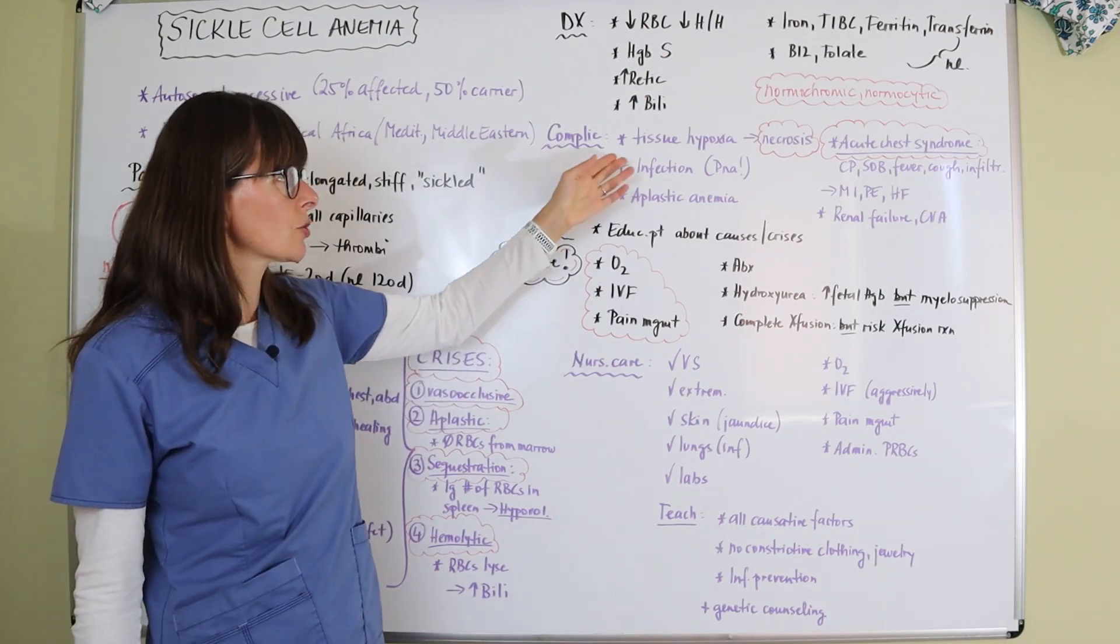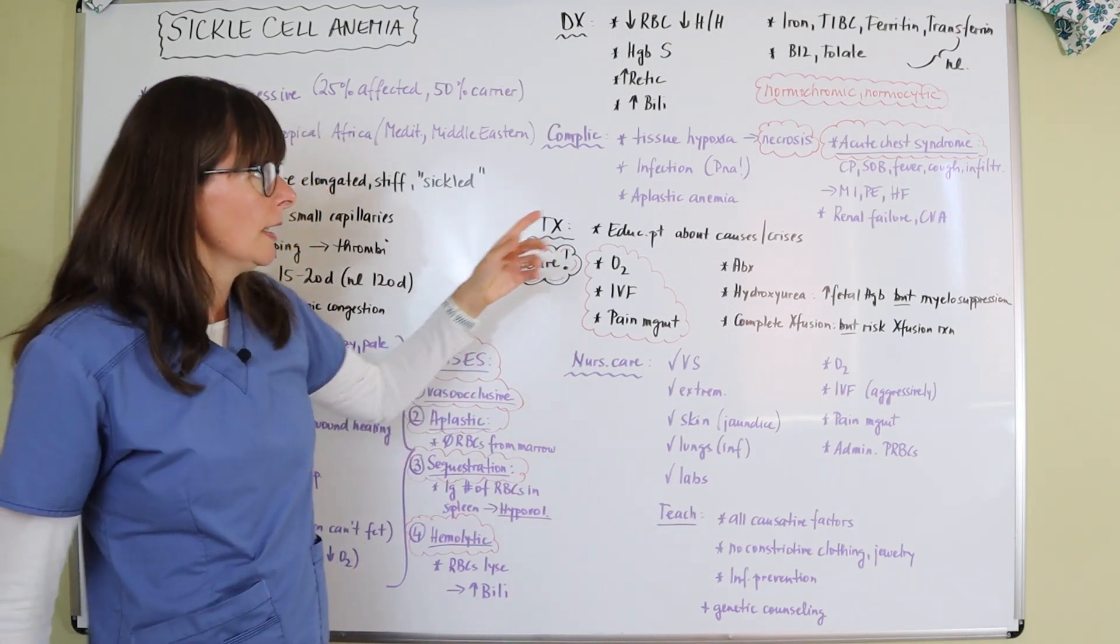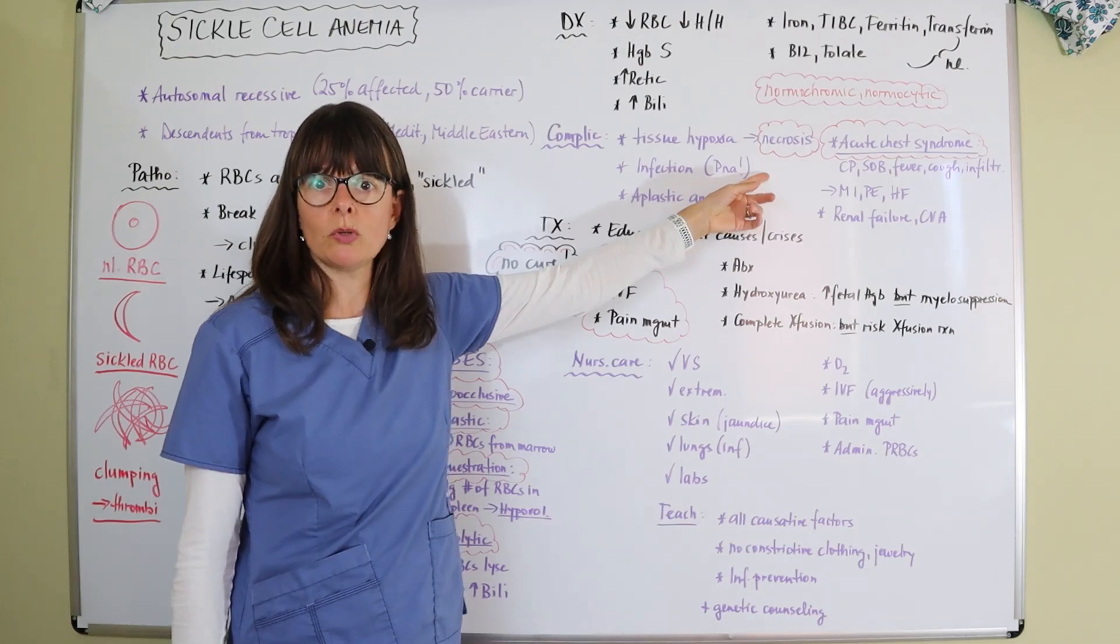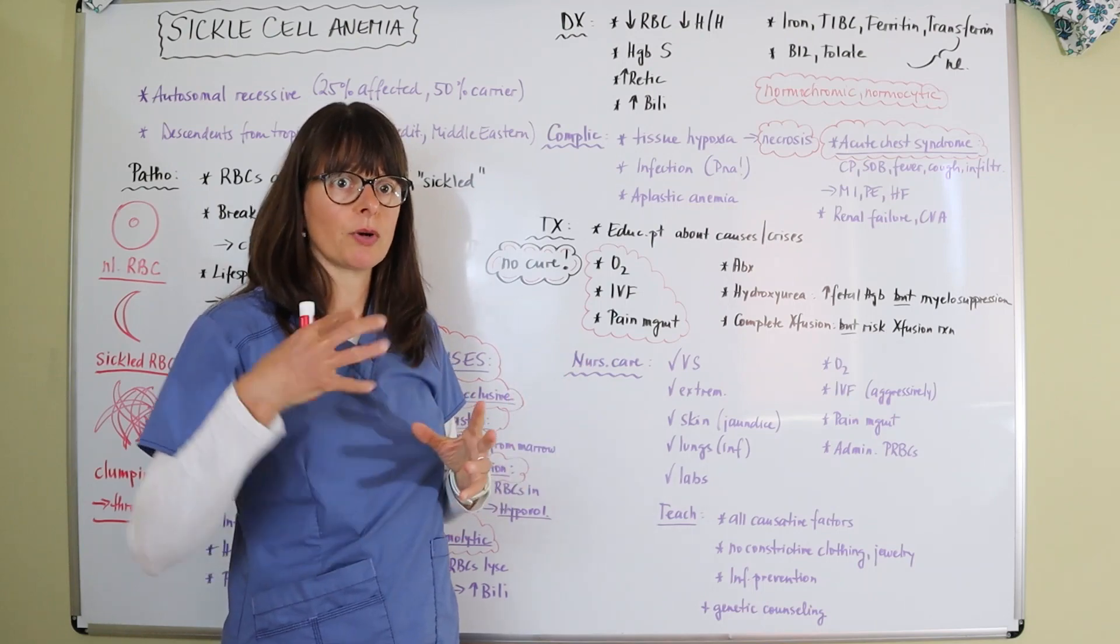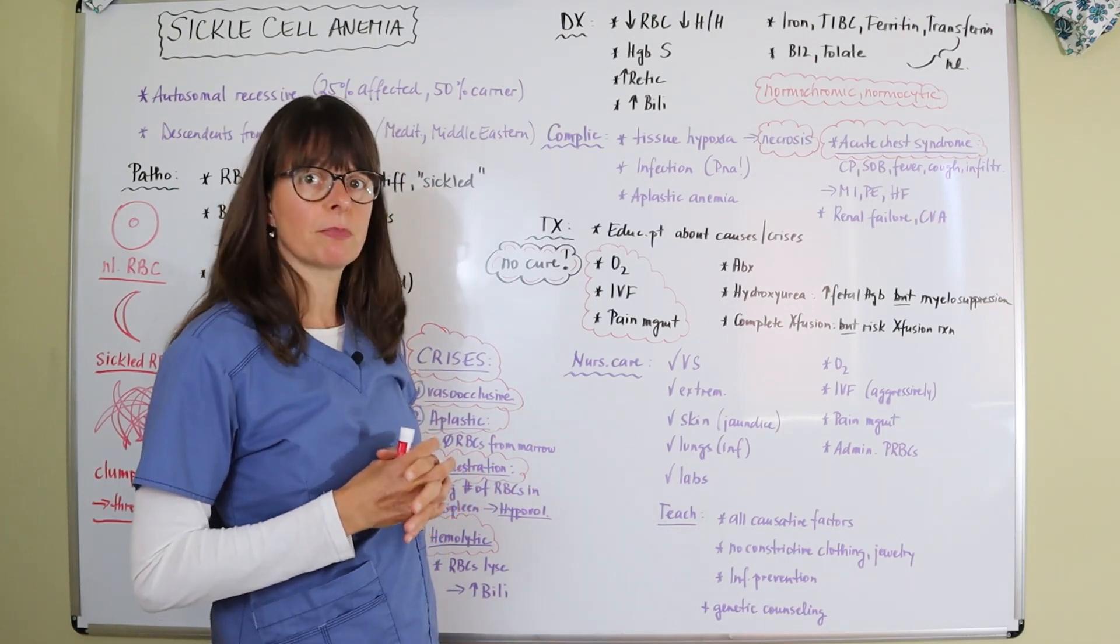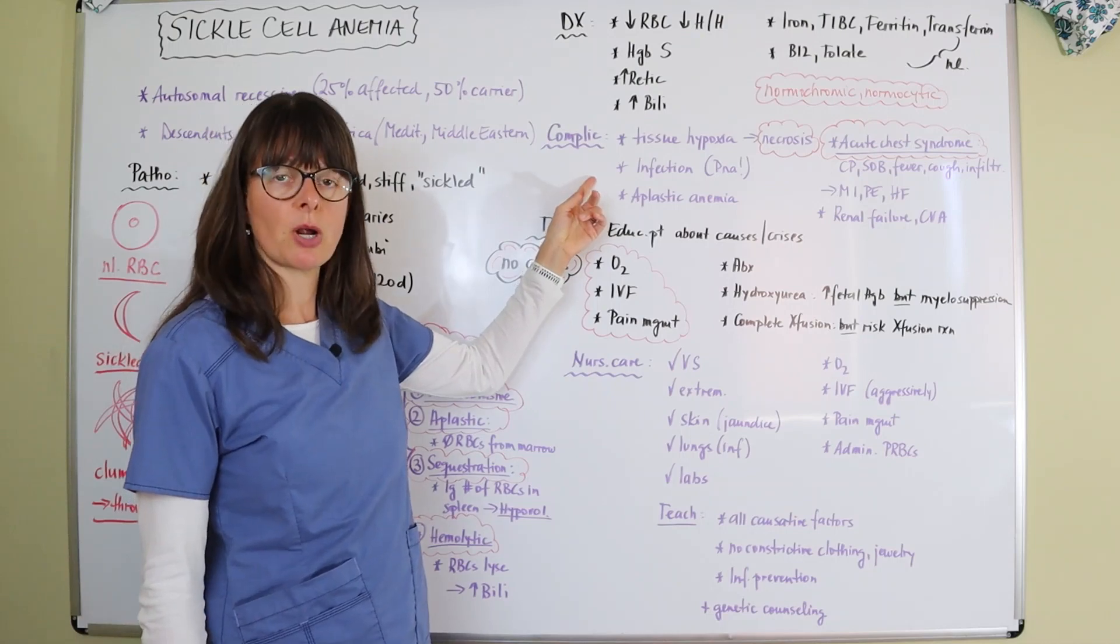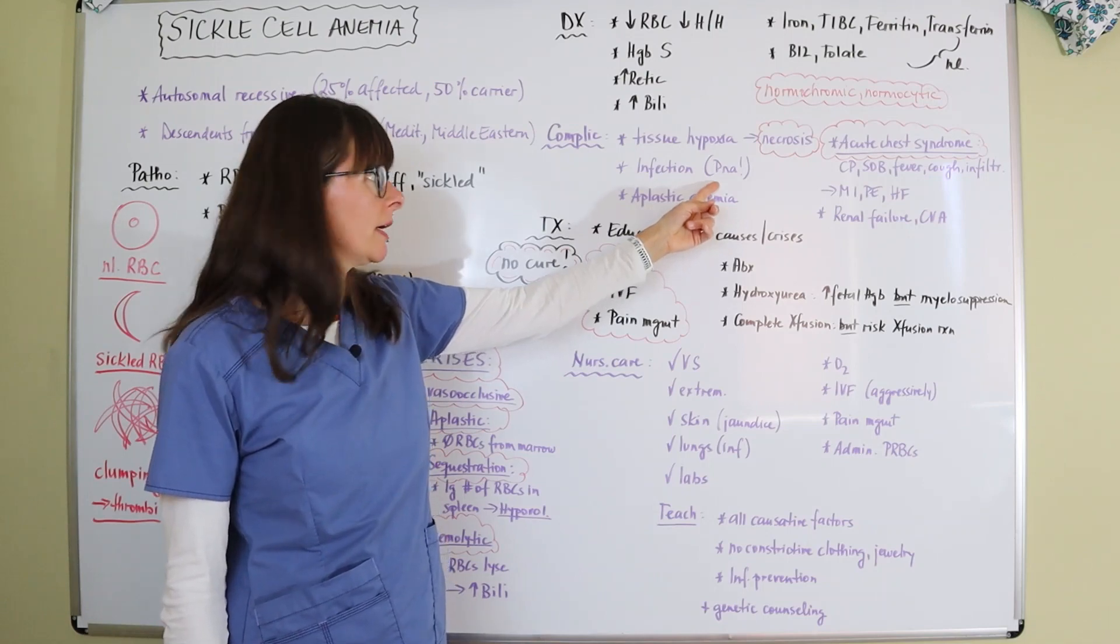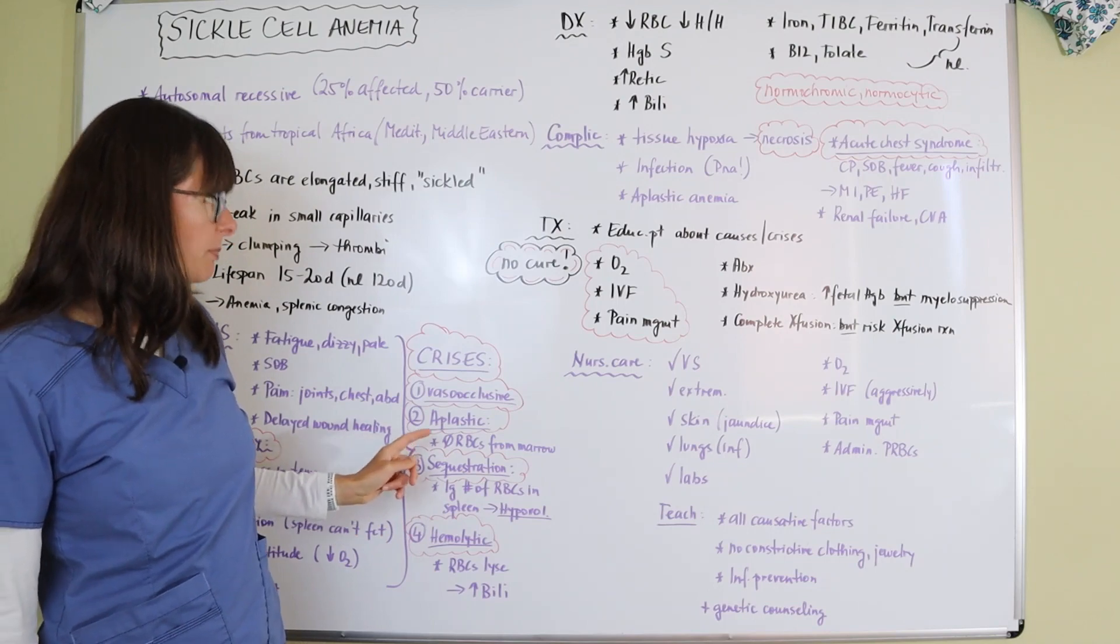Complications, again with tissue hypoxia because of that clumping and the decreased blood flow, there is a risk for necrosis. So whether that's a wound in the extremities or necrosis to the heart muscle being an MI or necrosis to the brain cells, which would be a cerebrovascular accident, it can be really severe. And then patients are at higher risk for infection because of the problem with the spleen congestion, and most likely that's going to be pneumonia. They're also at risk for aplastic anemia, like I discussed with this aplastic crisis.